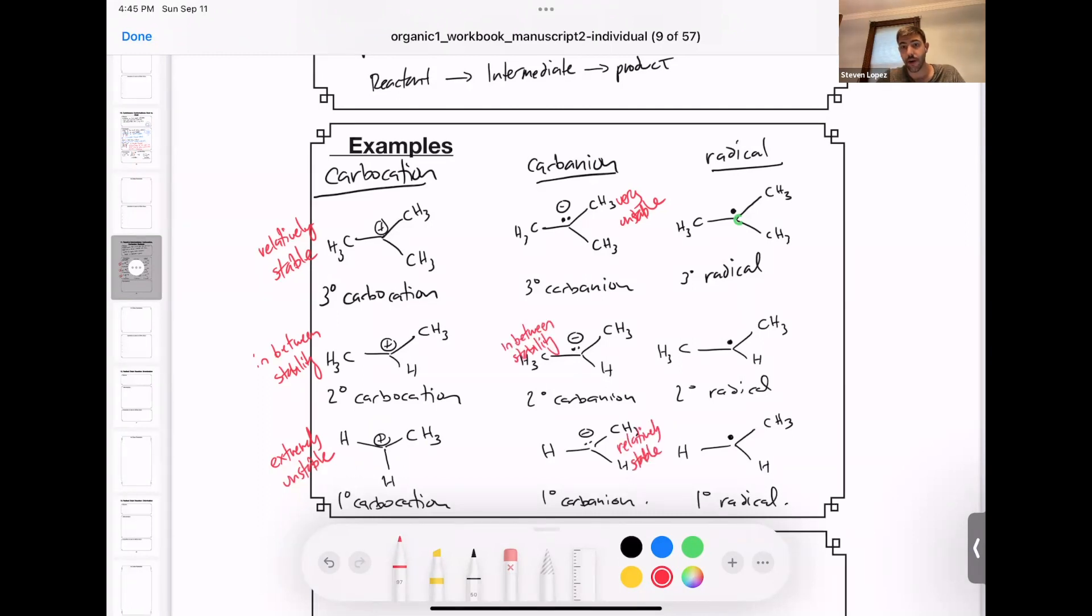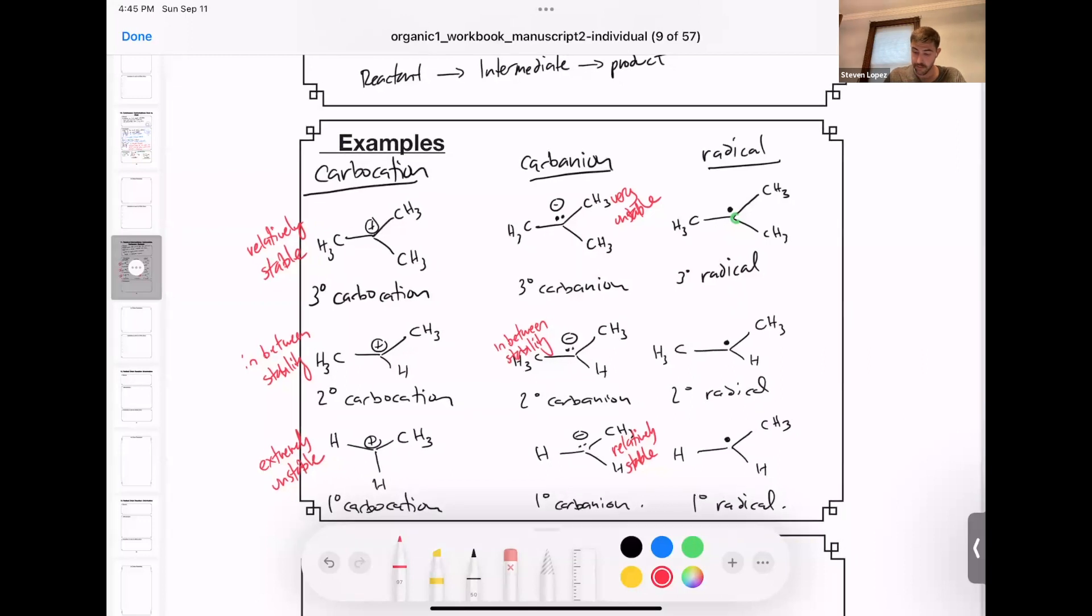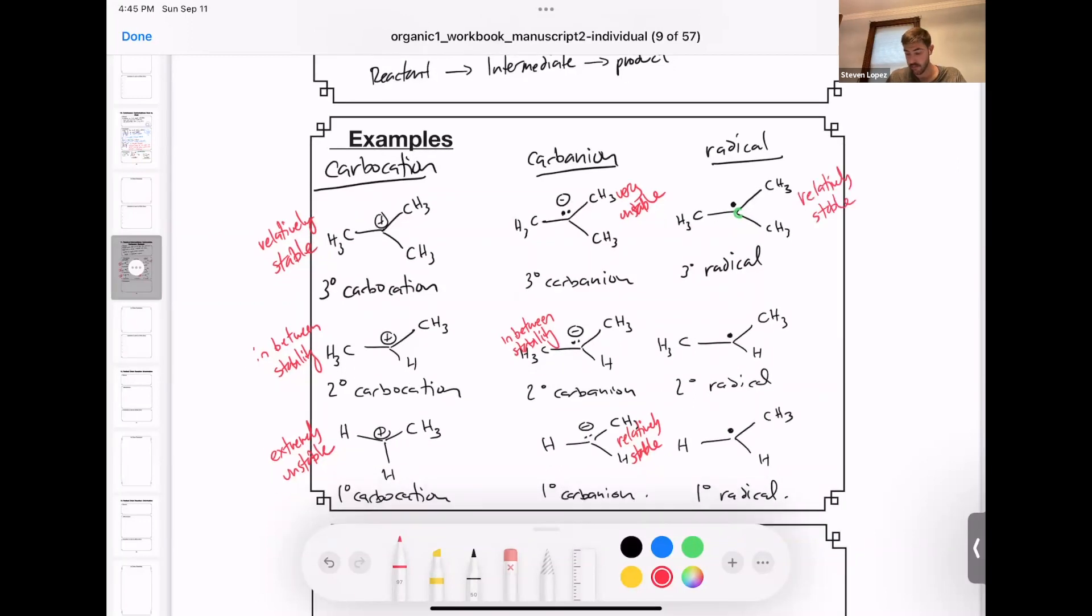Radicals follow the same behavior of carbocations, but don't pay the same energetic penalties that carbocations do. So tertiary radicals are relatively stable, primary radicals are very unstable, and secondary are in between. And that exception we should primarily talk about is about that primary carbocation.